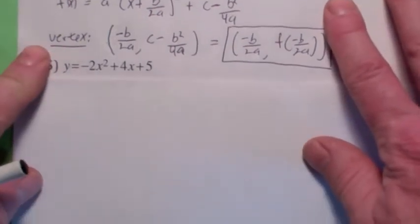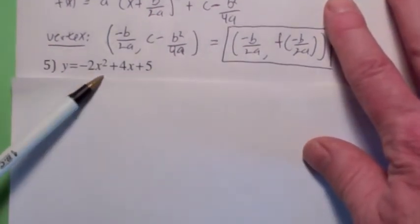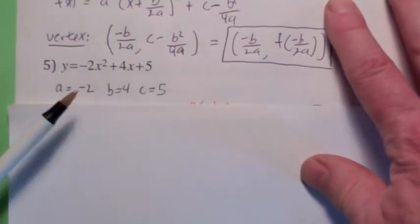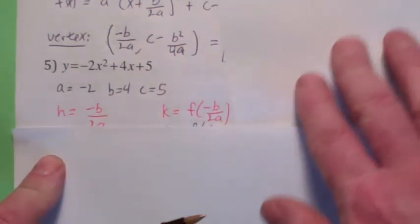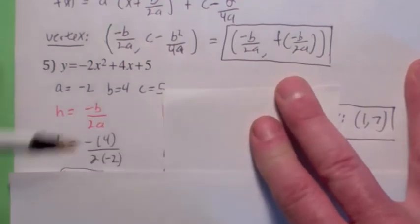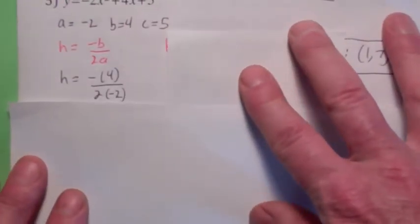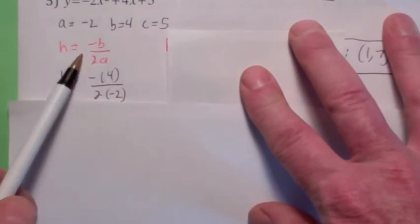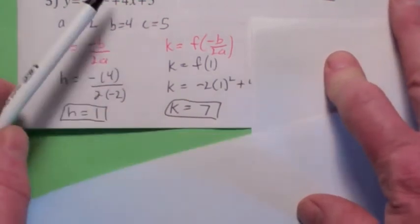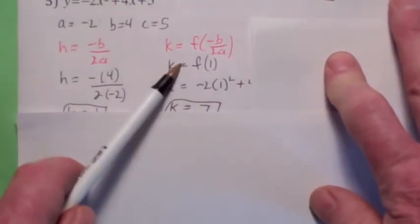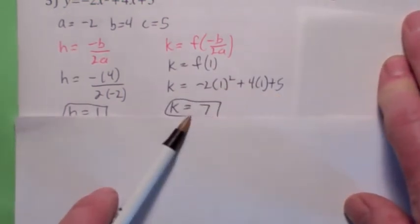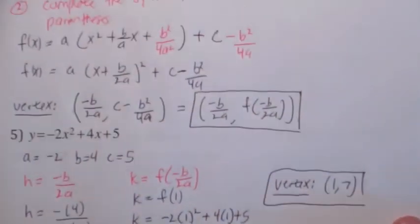If all you want to do is find the vertex, you don't have to go through all that mess. All you have to do is identify a, b, and c. The x-coordinate of the vertex is negative b over 2a. In this case, negative b over 2a becomes negative 4 over 2 times negative 2, which is 1. The y-coordinate of the vertex is found by plugging that value 1 back into the function: f(1) equals negative 2 times 1 plus 4 times 1 plus 5, which is 7. So the vertex is the point (1, 7).